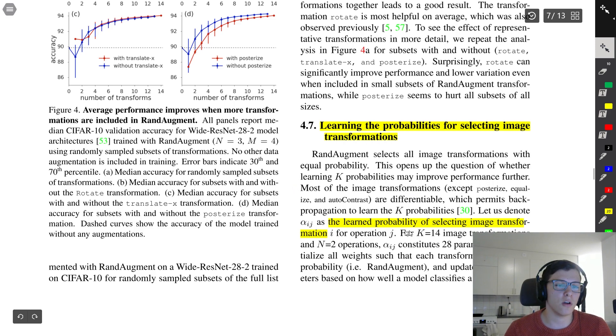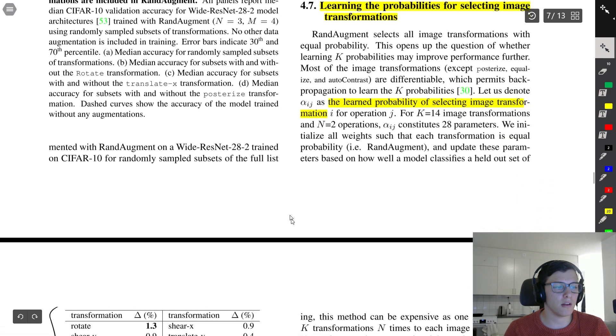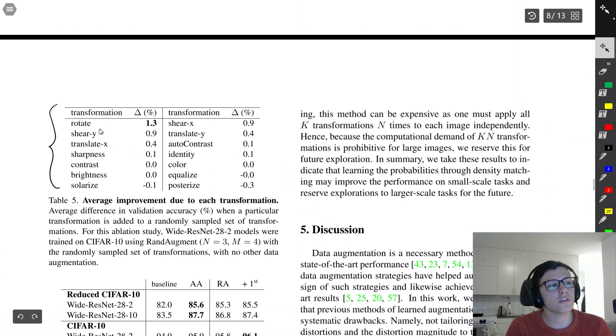In this last part, they discuss some ideas of how they can have a learned probability of selecting image transformations rather than having this fixed probability. Another thing that's pretty interesting is that they also checked which transformations were most important and found that rotation, shearing, and translation were best associated with an increase in validation accuracy. Actually, some of them like solarize and posterize actually decreased validation accuracy, which is quite interesting.